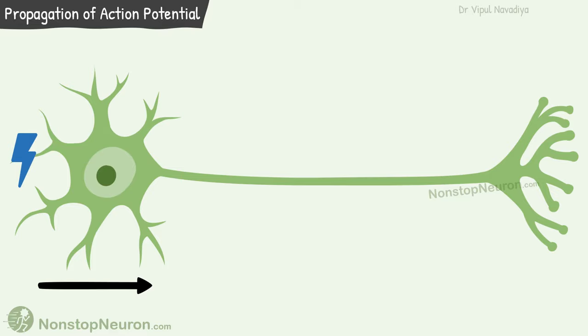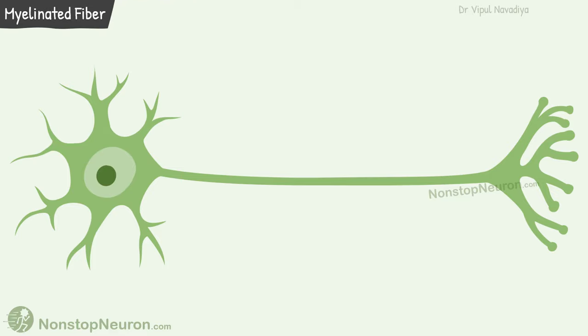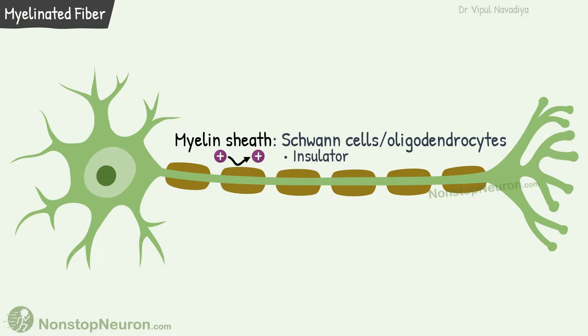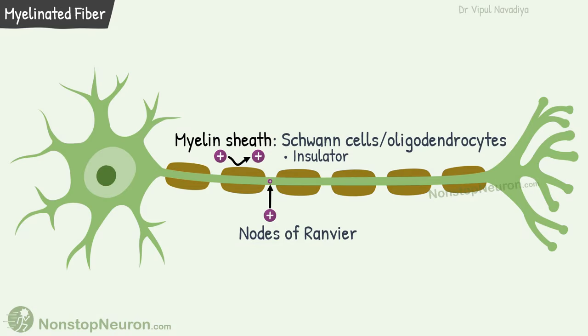This helps us understand the basic concept, but in our body the system is more advanced. We have a myelin sheath around the axons, made up of Schwann cells or oligodendrocytes. It works as an electrical insulator that decreases ion flow through the membrane. The sheath is interrupted at regular intervals — between two successive Schwann cells, a small area remains uninsulated called the node of Ranvier. Here ions can flow with ease, and in fact the density of voltage-gated sodium channels is very high in this area.